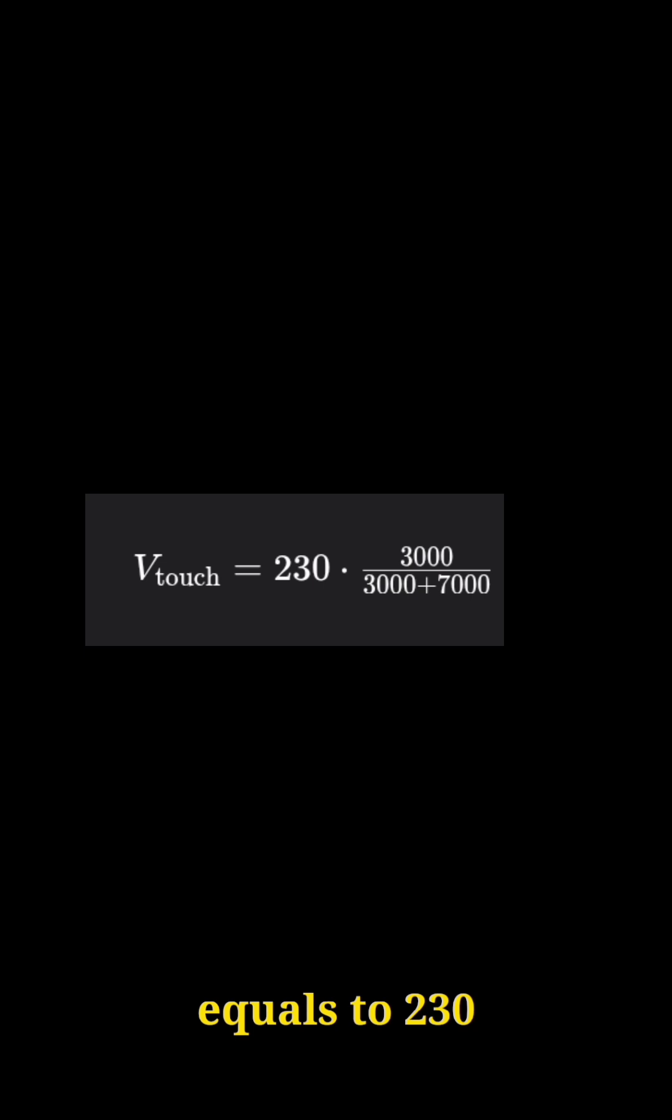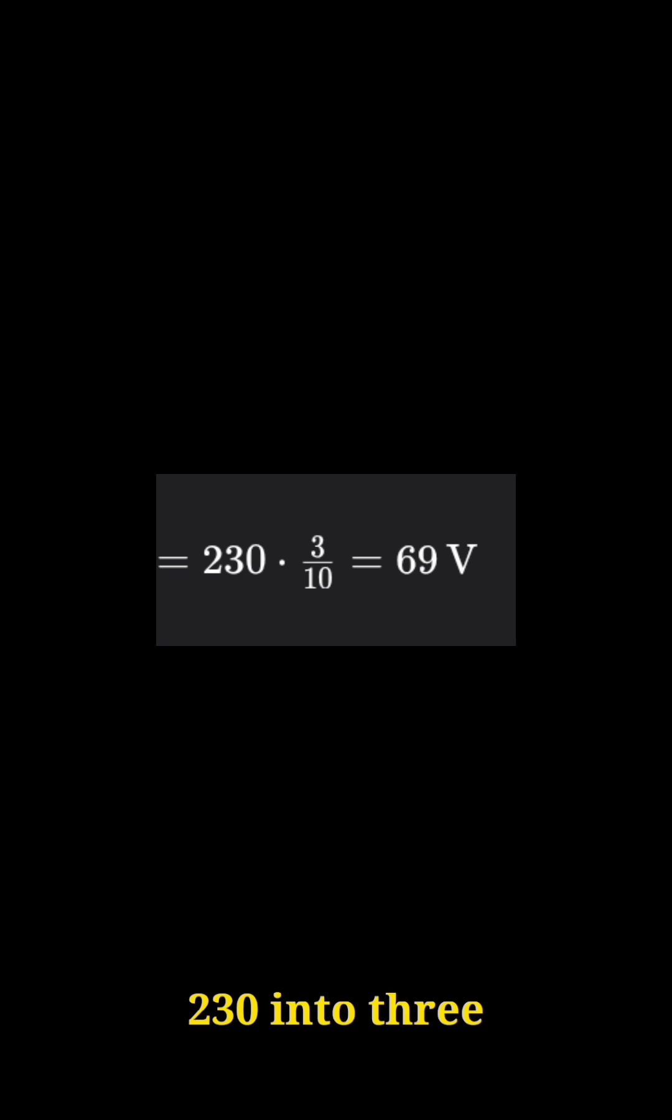Calculation: V touch equals 230 times 3000 divided by 3000 plus 7000. Using the voltage division rule, this equals 230 times 3 divided by 10, which equals 69 volts, or approximately 70 volts. This voltage lands on our body and is enough to cause pain or involuntary reaction.